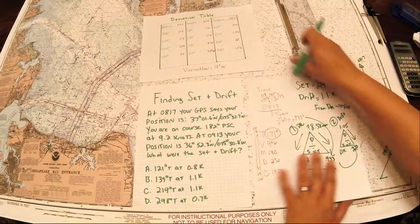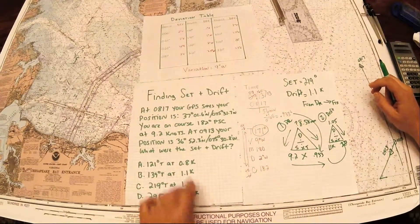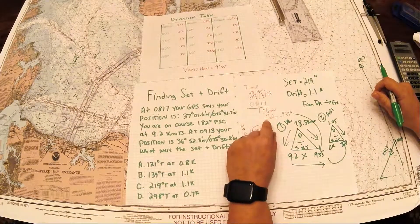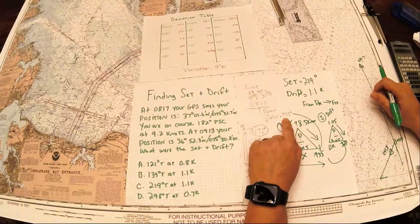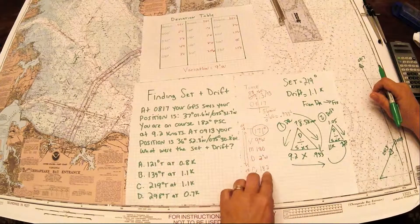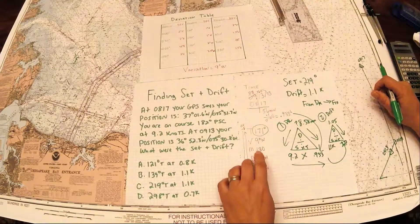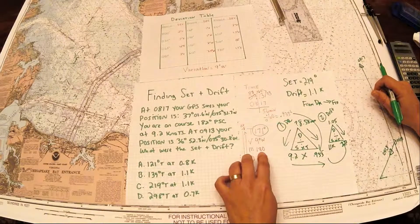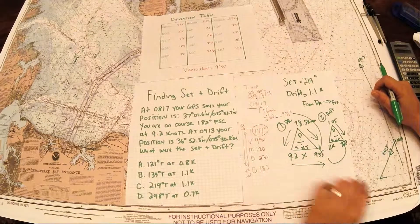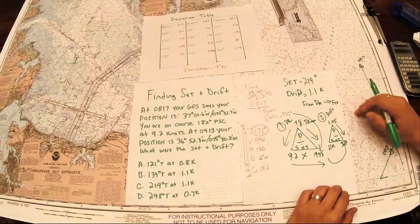So that's the set and the drift. Let's review what we did. First thing I did was convert the time using the time given in the problem. I had 9:13 and 8:17, I took the time difference, I got 56 minutes, I divided that by 60 to get it into a decimal, 0.933. I also converted my course, which was PSC, to true: 182. I used my table to get the deviation of 2 west. Math gives me 180 because I'm subtracting west. Variation is given, 9 west, I'm still subtracting, 171. That's the true course we're going to lay out. Now if this problem would have said 182 true, you leave it alone and you just plot it as is. Everything can go on this chart that's true.